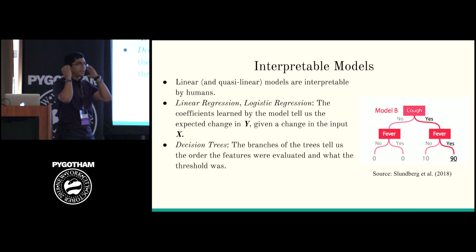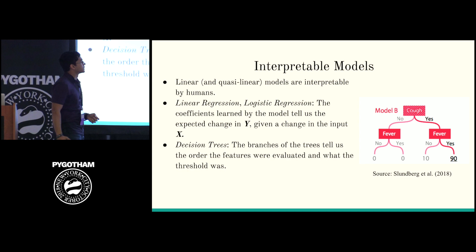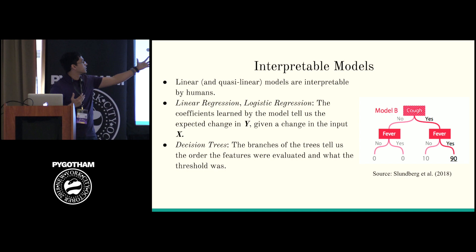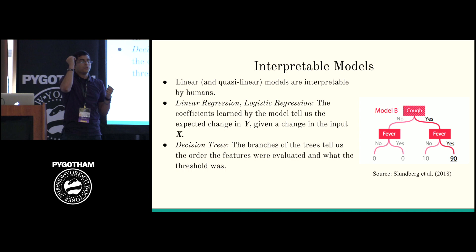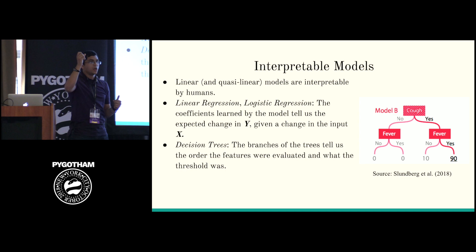Decision trees are sort of quasi-linear in the sense that you can start at the root and follow the tree down branch by branch to see why you got a prediction. You can look at this tree and say: yes, you were coughing, yes, you have a fever, you have a 90% chance of catching something. You can look at this picture without knowing anything about the model and understand how it's making the decision.